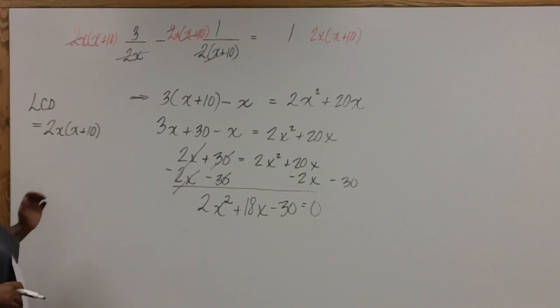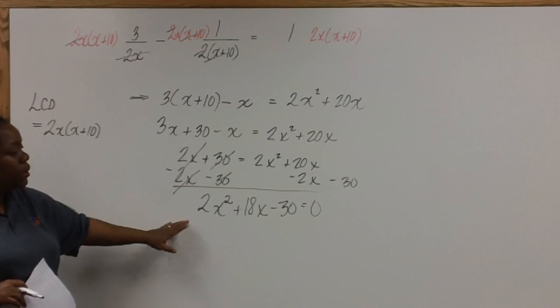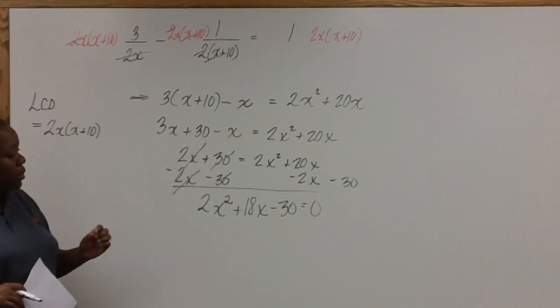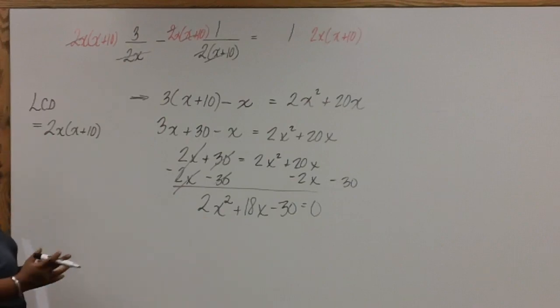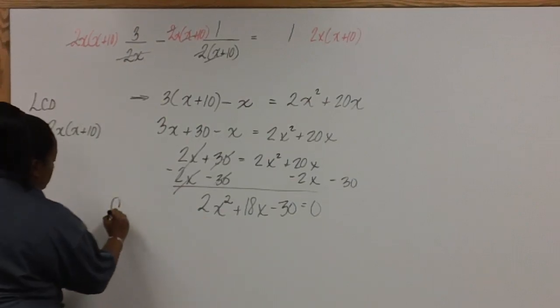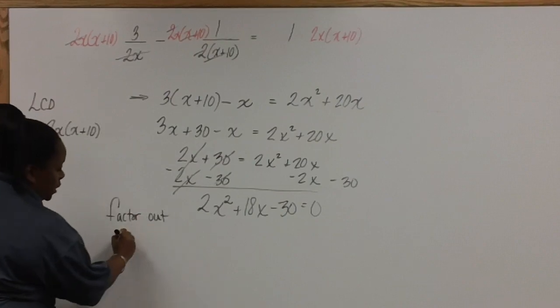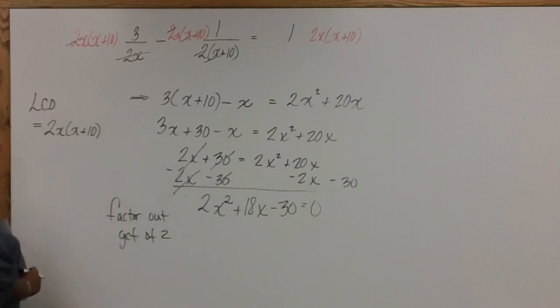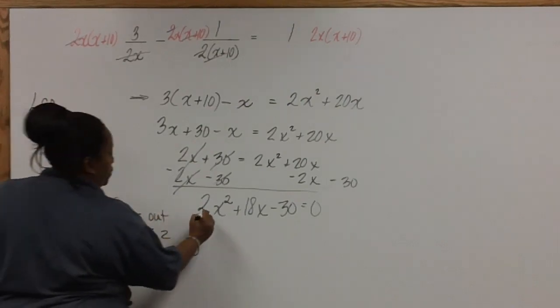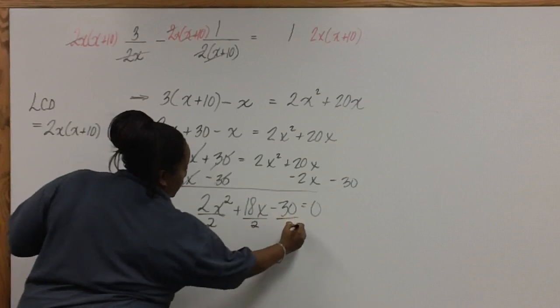Now you can go ahead and use the quadratic formula with these numbers. But we can make it a little easier on ourselves if we factor out the GCF of 2 first. That way we aren't dealing with such large numbers. So factoring out the GCF of 2 means that we're just dividing each of these by 2.